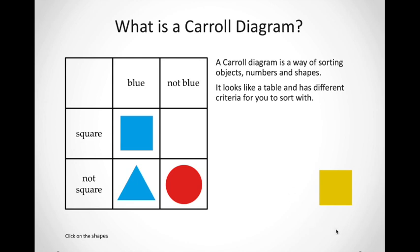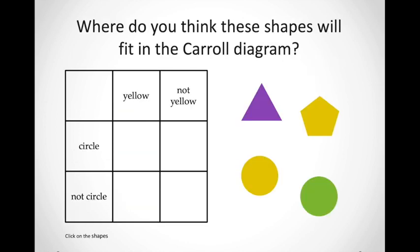Now we have one more shape left — a yellow square. We know that it is a square and we can see that it's not blue, so we're going to put it in this block over here. This is a different way of sorting objects. Now we're going to sort out objects using circles and the color yellow. If it's a circle we will put it in these blocks. If it's the color yellow we will put it in this block. If it is not yellow we will put it in this block, and if it's not a circle we will put it in these blocks over here.